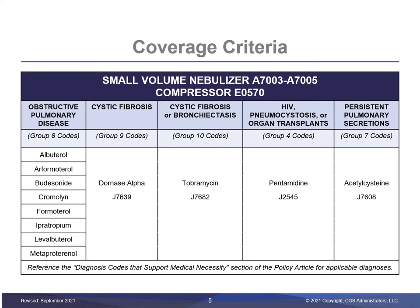The table on this slide represents specific inhalation solutions and the corresponding diagnosis codes that support the medical necessity for each to be used with a small-volume nebulizer. Note that a variety of drugs qualify for use with certain diagnoses, while in other cases only one drug may be available to qualify under a specific diagnosis. For example, a diagnosis of obstructive pulmonary disease has eight drugs that would qualify for payment of the nebulizer, cystic fibrosis has two, and bronchiectasis only has one.